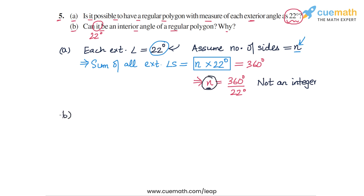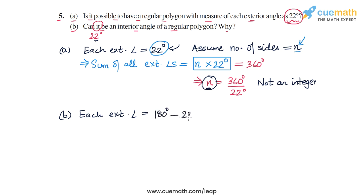Now let's do part B. We need to check whether 22 degrees can be an interior angle of a regular polygon. If each interior angle is 22 degrees, then each exterior angle will be 180 degrees minus 22 degrees, which equals 158 degrees. So we need to check whether a regular polygon with each exterior angle measuring 158 degrees is possible.